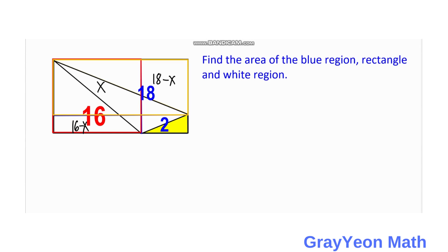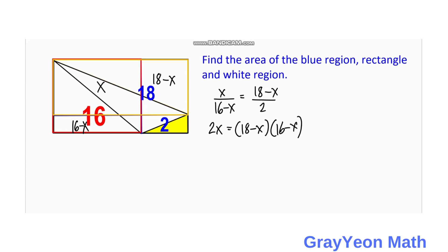We solve for X using proportionality of the rectangles. For the left side we have X over (16 minus X) equals (18 minus X) all over 2. Cross-multiplying gives 2X equals (18 minus X)(16 minus X). Expanding the right side: 2X equals 288 minus 34X plus X squared.